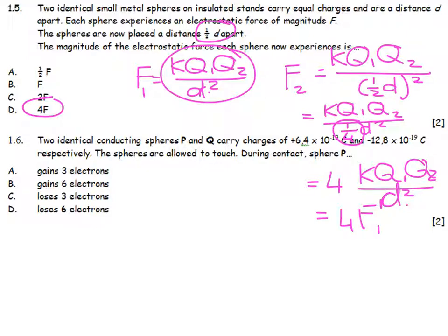Two identical conducting spheres, P and Q, carry charges of 6.4 times 10 to the negative and negative 12.8 times 10 to the negative. Those are the two charges. The spheres are allowed to touch. Let's look at how many electrons. This 6.4 over here really means that it's plus 4 electrons, because if I divide it by 1.6, that's plus 4 electrons. This is minus 8 electrons over there. So if I have got plus 4 and minus 8, and I touch them together and divide it in half again,